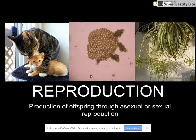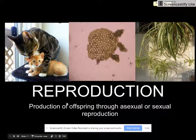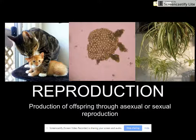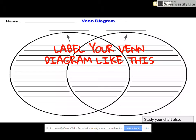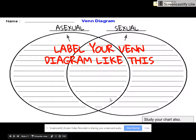Reproduction — the definition is the production of offspring either through asexual or sexual reproduction. All organisms reproduce to make offspring. On the bottom part of your notes, you'll see a Venn diagram. Label your Venn diagram with asexual on the left and sexual on the right.